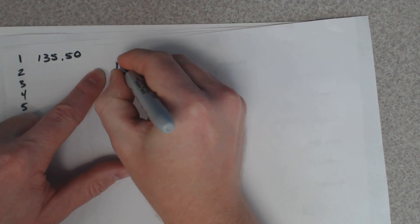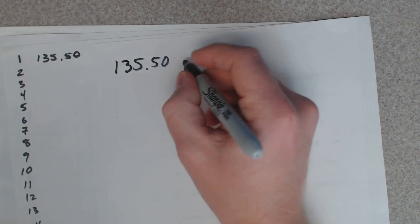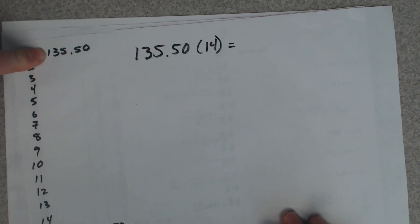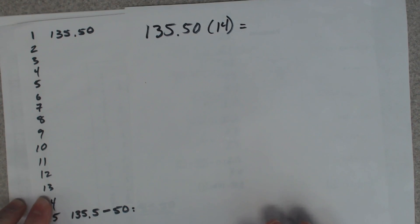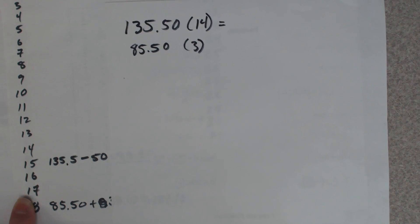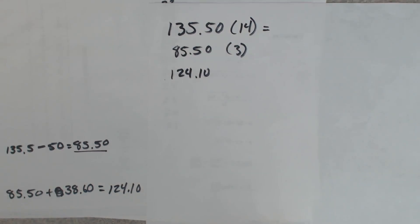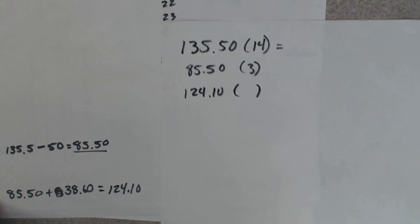He carries the $135.50 balance for 1, 2, 3, 4... 14 days. So if I multiply that out, that's a shorthand way of adding $135.50 to itself 14 times. Now he carries the $85.50 balance for how many days? 1, 2, 3 — three days. So he carried $85.50 for three days.